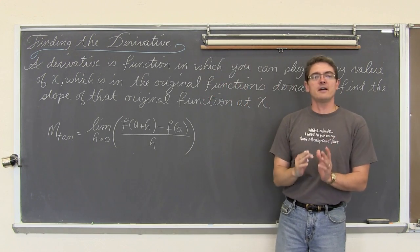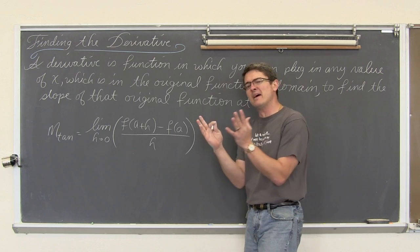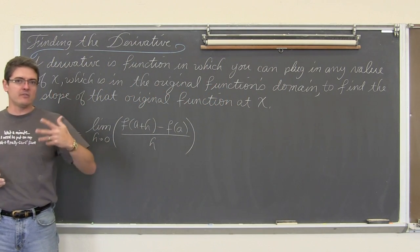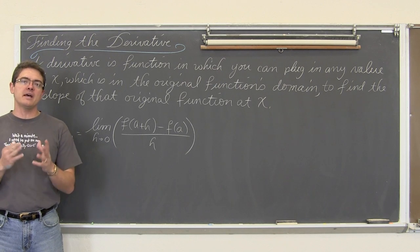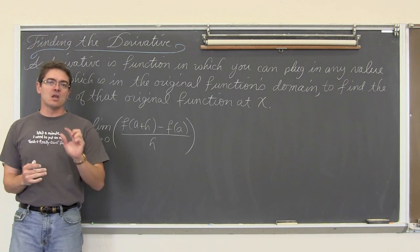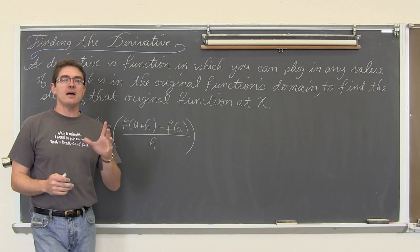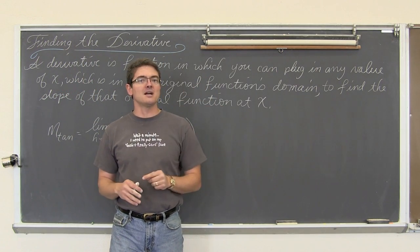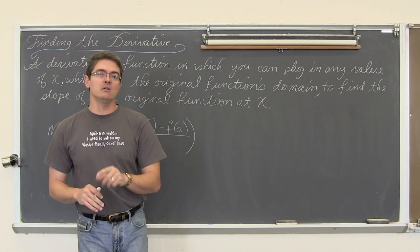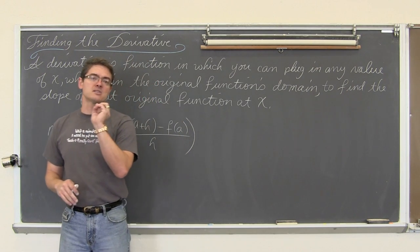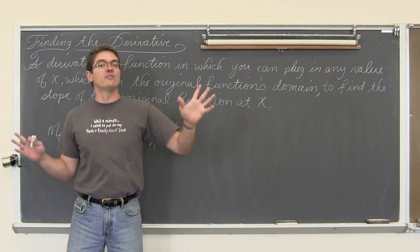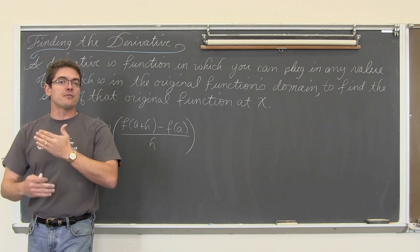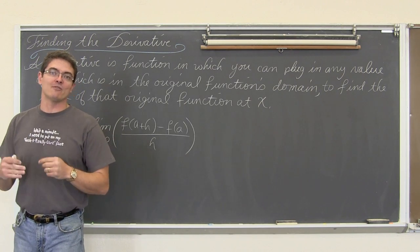But we are not going to find a slope at a given point. We are going to find something that is even better. We are going to find a derivative which is going to be a new function, a derivative of the original one, that will tell us very, very quickly the slope at any given value of x. So if we have a curve and we want to find the slope at three or four points and not just one, we want to find the derivative. Then we can take that derivative and plug in x equals two, plug in x equals five, plug in x equals whatever, and just like that we will have the slope of the original function without going through the whole derivative process for every single point.